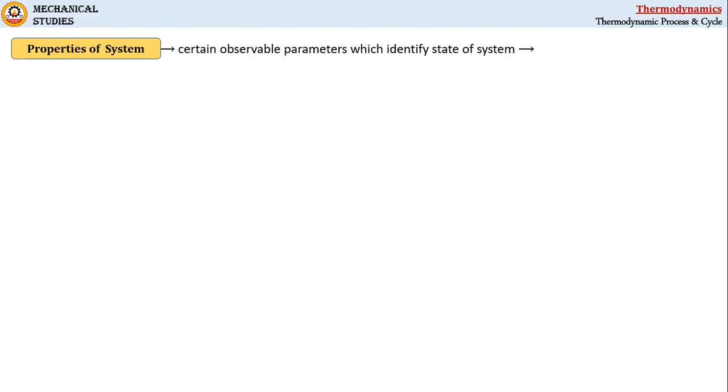For example, if we consider water inside a bucket as a system, then the condition of the system—whether the water is hot or cold—can be specified by its temperature.